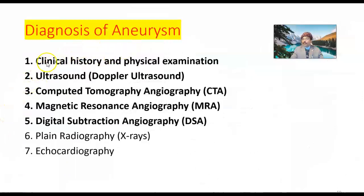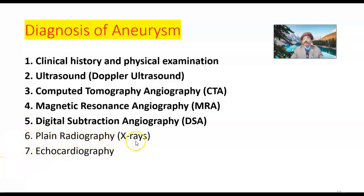Diagnosis requires clinical history. On physical examination, we may detect turbulence, bruit, or abnormal pulsation. Imaging methods include ultrasound, Doppler ultrasound, computed tomographic angiography (CTA), magnetic resonance angiography (MRA), and digital subtraction angiography (DSA). Plain radiography, X-rays, and echocardiography may also be used where available. These modalities are required to diagnose aneurysm, with CTA, MRA, and DSA being the more specific tools.